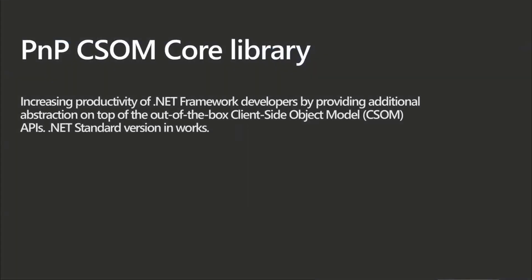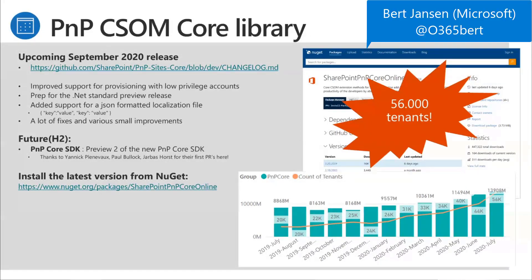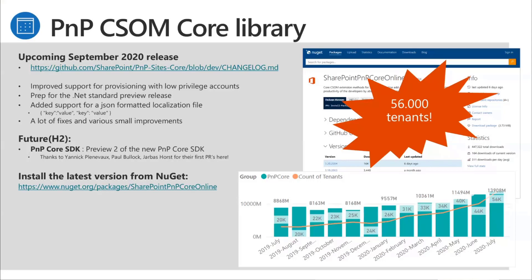Let's go to the PMP updates. Bert will do a quick update on what's happening here. First of all, usage is really exploding — skyrocketing. It went from a 40,000 range to 65,000 in the July timeframe. August will again grow. So it's a huge amount of tenants using PNP Site Score, which is really cool.